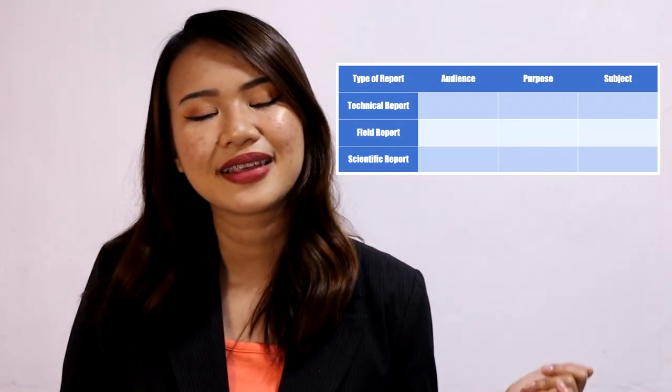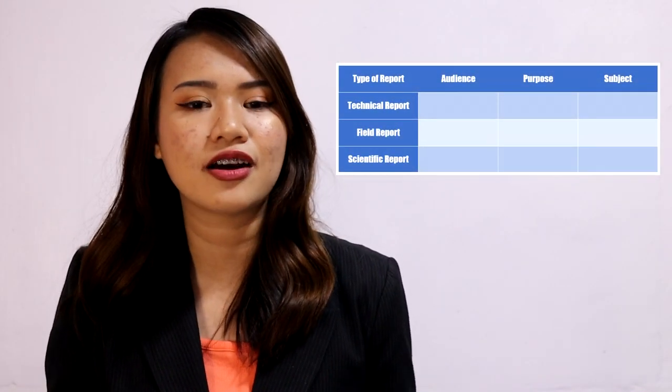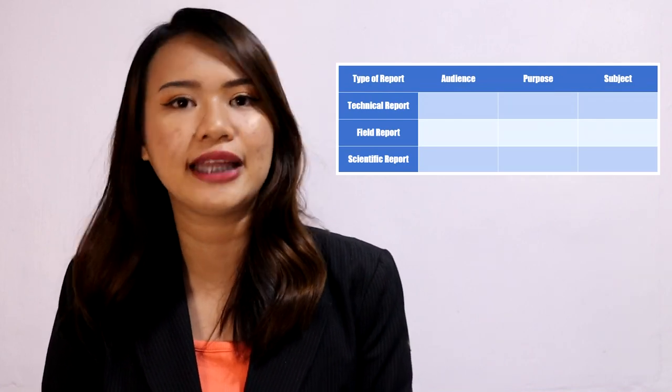For my students in this subject, before I ask you to start writing your own report, I first want you to compare and contrast the three types of reports presented in this lesson — the technical, field, and scientific report — and please be guided by the table provided. For your comparison and contrast, I want you to use a Venn diagram. And that is it for today's video. Thank you so much for listening to my class. I hope you learned something. Bye!